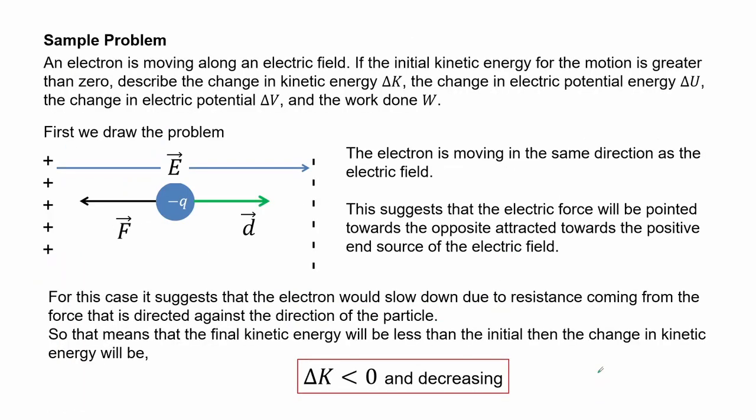Sample problem: an electron is moving along an electric field. If the initial kinetic energy for the motion is greater than zero, describe the change in kinetic energy, the change in electric potential energy, the change in electric potential, and the work done. First we draw the problem — the electron is moving in the same direction as the electric field. This suggests the electric force points in the opposite direction, attracted toward the positive end of the electric field. The electron would slow down due to resistance from the opposing force, so the final kinetic energy will be less than the initial — the change in kinetic energy is less than zero and it is decreasing.